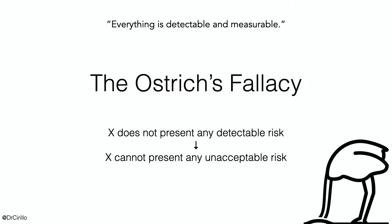Another very common fallacy is the so-called ostrich fallacy. In the ostrich fallacy, we start from the wrong assumption that everything is detectable and measurable. We know that this is not true. There are many situations in which payoffs are not easily quantified, nor the probabilities. It is extremely dangerous to assume that if something does not present any detectable risk, then it cannot present any unacceptable risk. What if our way of measuring risk is limited? What if our model is wrong? If you are a little bit familiar with statistics, you know that as a statistician you are very much interested in type 1 and type 2 errors, also in type 3.